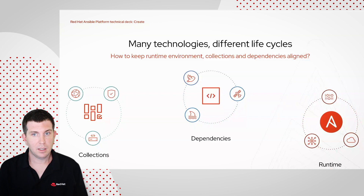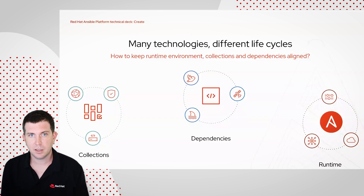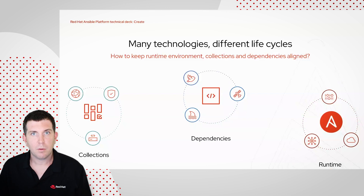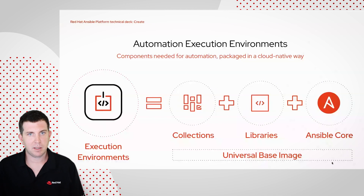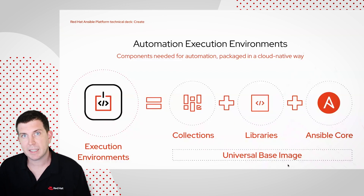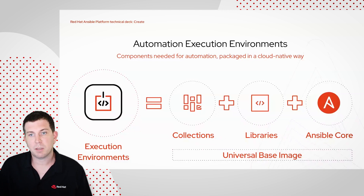Now that you understand what a collection is, I want to talk about a new paradigm shift. We have over a hundred different collections and dozens of certified partners, plus your own collections built within your organization. Each collection may have different dependencies — Python dependencies, system-level libraries — and they might require different versions of Ansible. To solve this problem, we've introduced a new technology called Automation Execution Environments, or EEs. These bundle all the requirements to execute automation: the collections you need, the playbooks, the Python dependencies, SDKs, and the Ansible core version you want to use — packaged on a universal base image and available on registry.redhat.io as part of your Red Hat subscription.